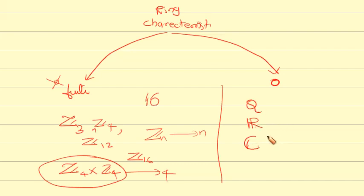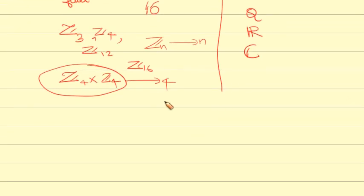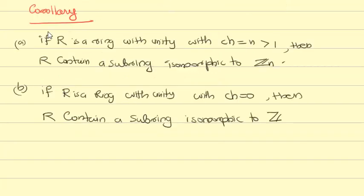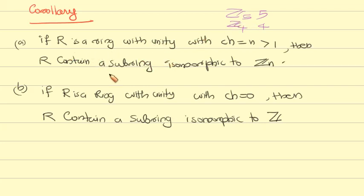Corollary: If R is a ring with unity and characteristic CH equal to n greater than 1, then R contains a subring isomorphic to Zn. Similarly, if CH of R equals 0, then R contains a subring isomorphic to Z.